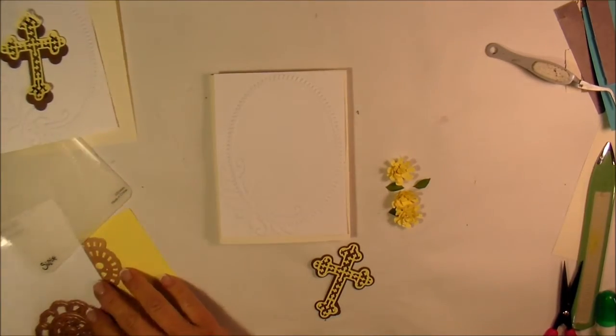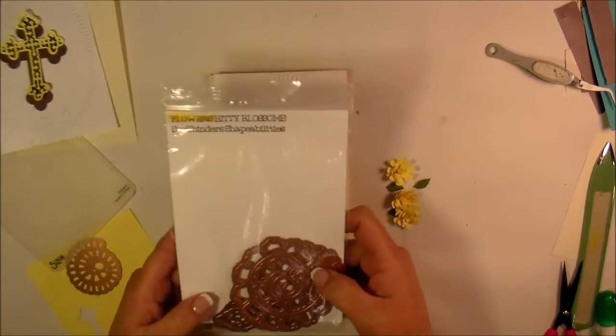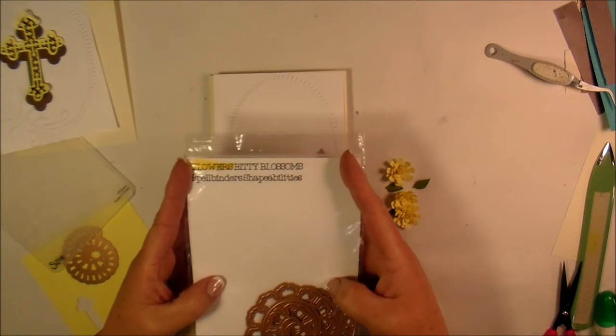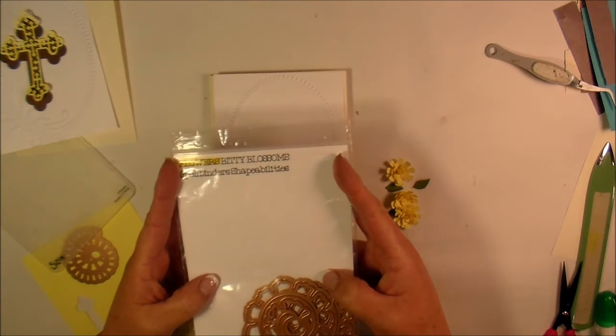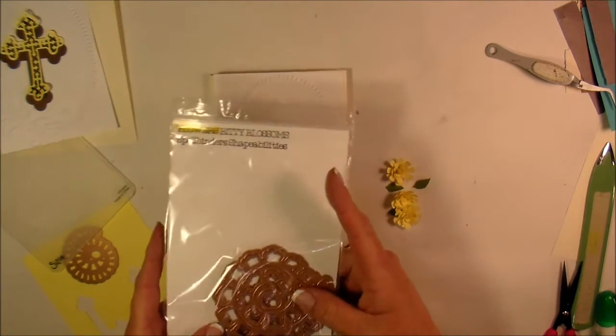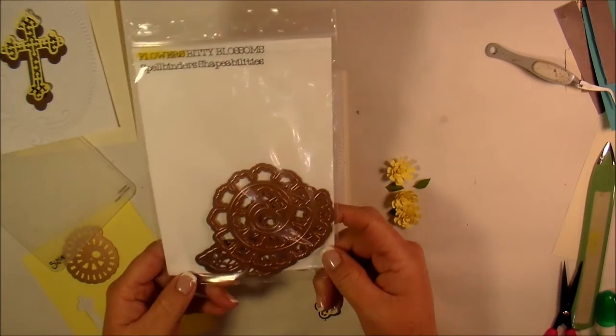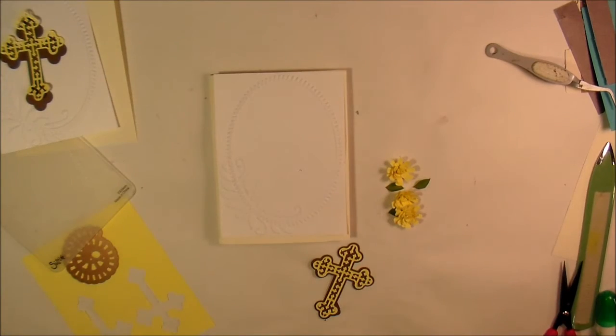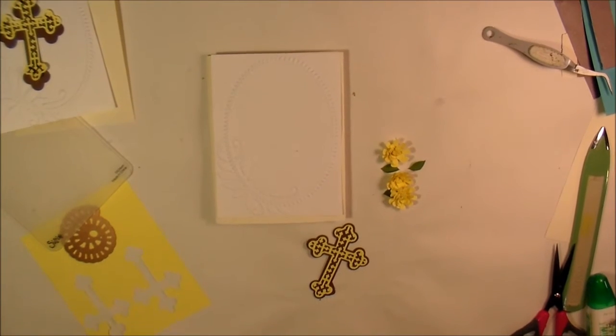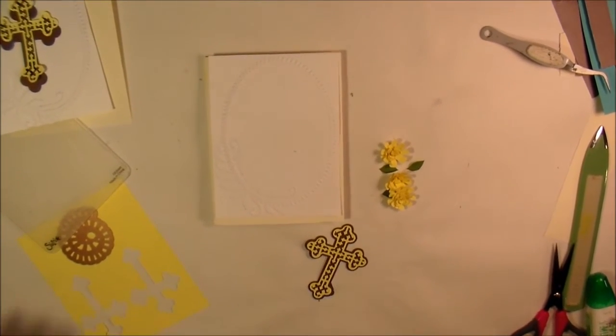All right. So here is the die cut that I used for the flowers. This is called Biddy Blossoms by Spellbinders. This is how I store all of my die cuts. I'm going to move my camera just a second. Hold on. It's too far down. Okay. There we go.